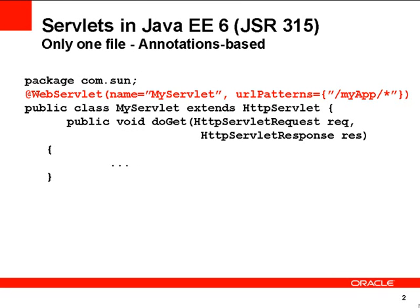But in Java EE 6, all of that is condensed into just one class and all the information in the deployment descriptor is now part of your annotation at web servlet. Your name and your URL patterns are easily captured over there. So as a result, your servlet is just one class file and web.xml becomes purely optional.